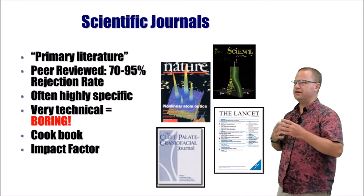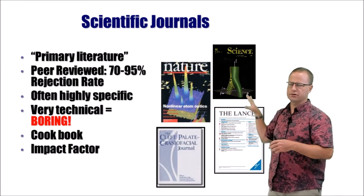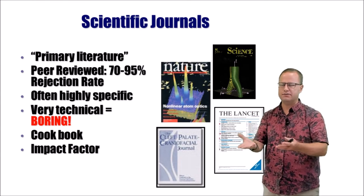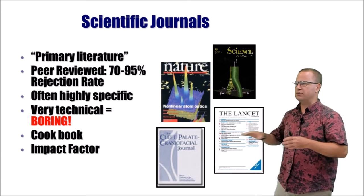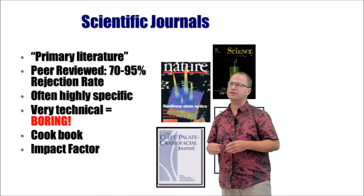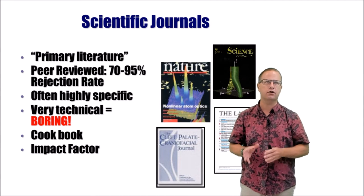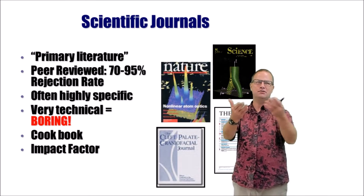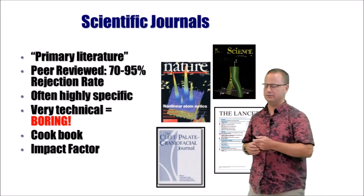These days it's hard to figure out what's a real journal and what's not. If someone gives you a journal and you want to know how reputable or widely cited it is, just Google something called the impact factor. The impact factor tells you how often articles in that journal are cited by other scientists. If you can't find an impact factor for a journal, that's pretty telling as well.